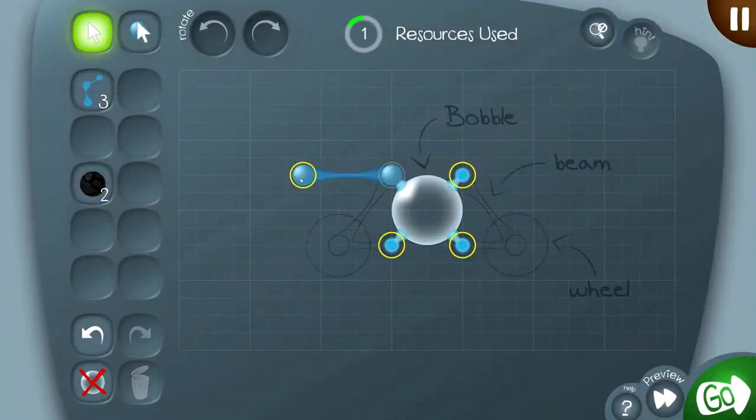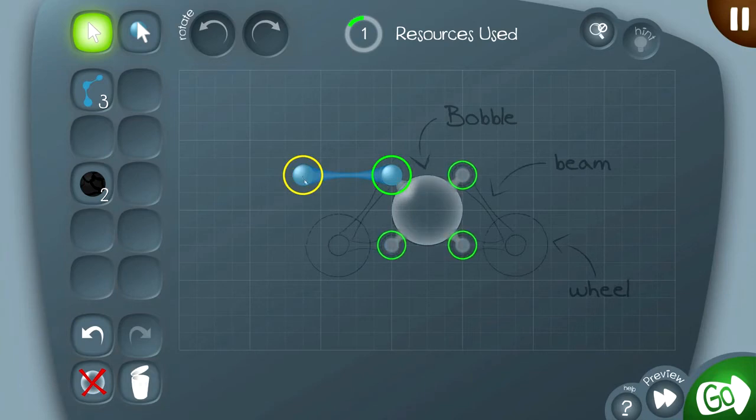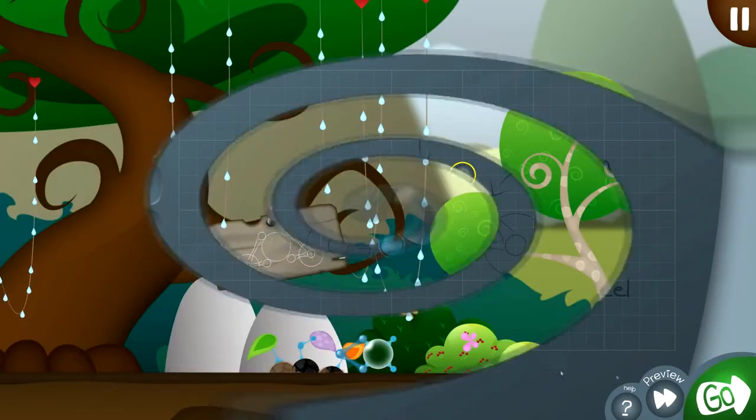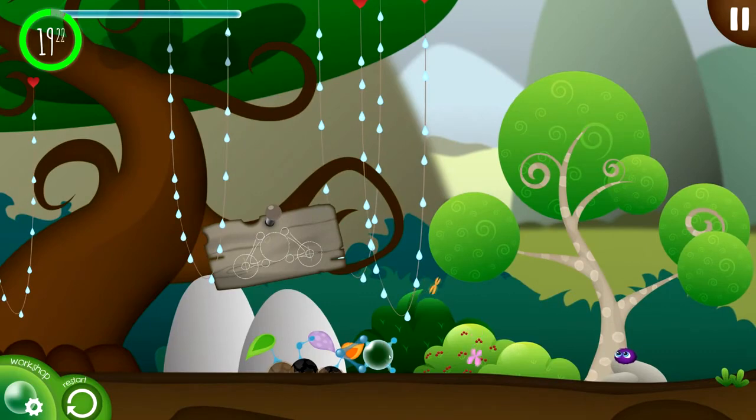A good way of bracing any structure like this is to use a triangle. So if I put another beam across here, then you can see that this is nice and rigid.